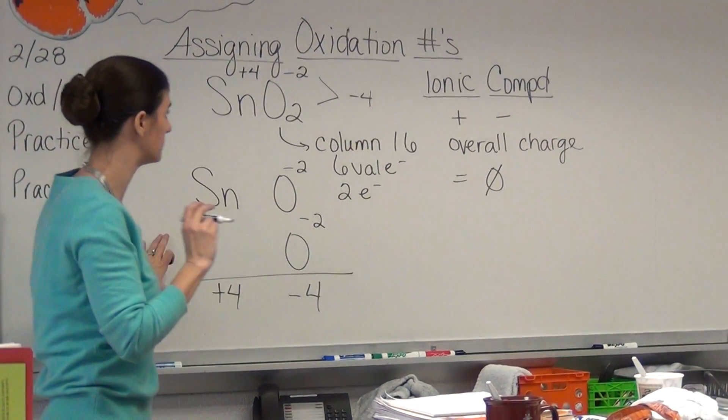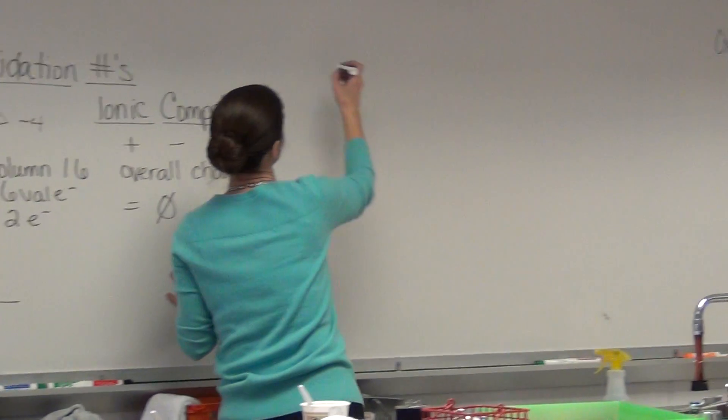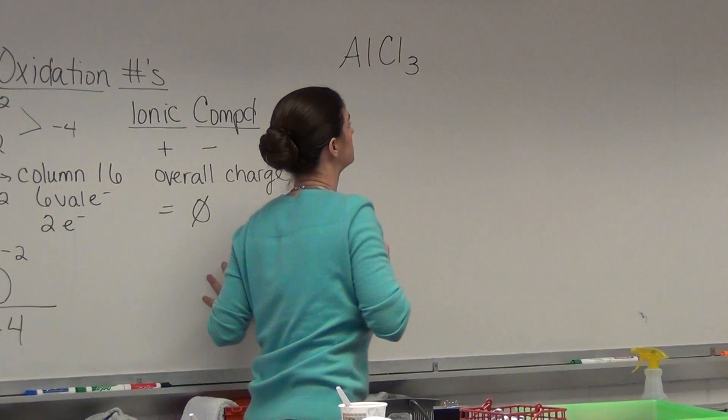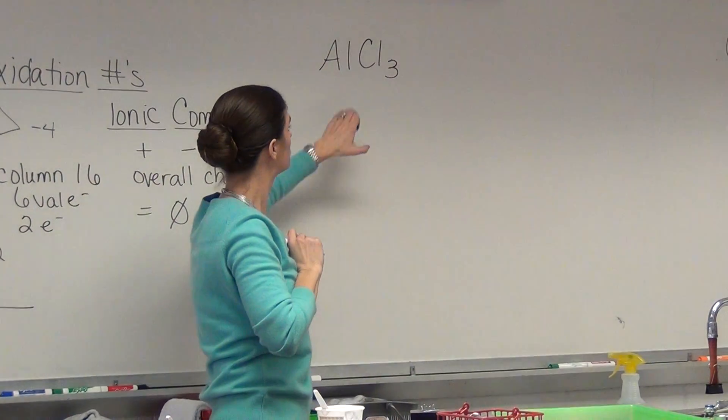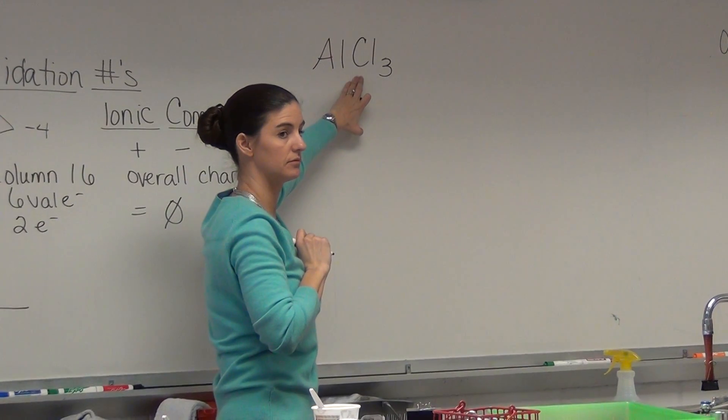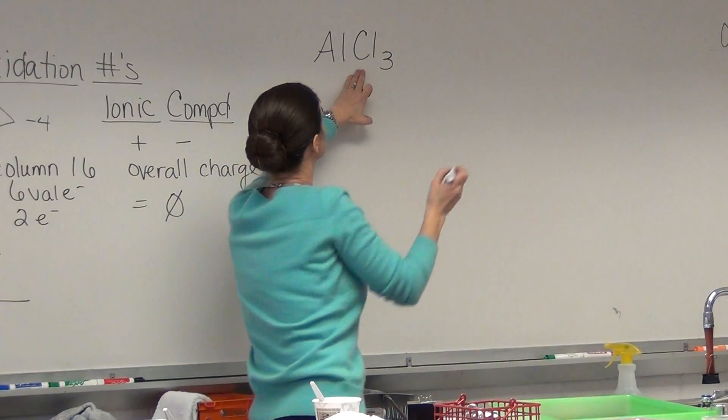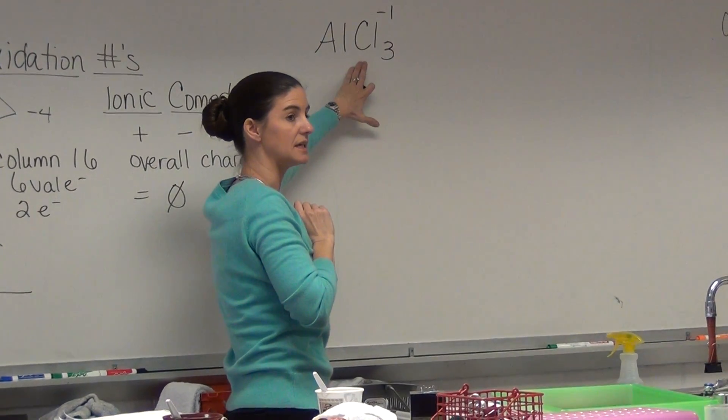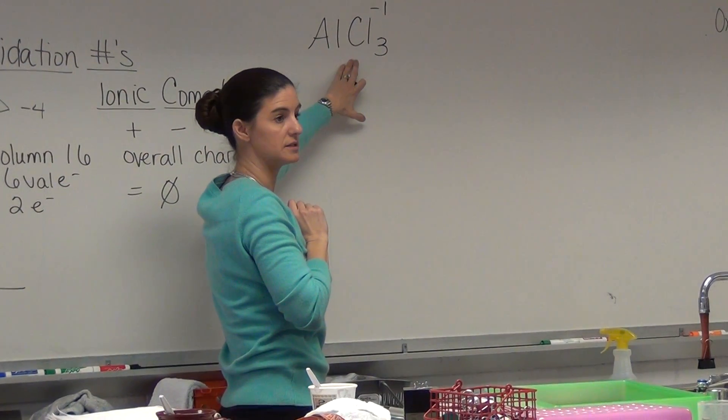We're going to try a couple. If we have AlCl3, we're first going to look at Cl, column 17, minus one, because it needs to gain one electron to get eight valence.